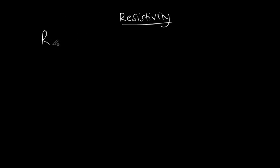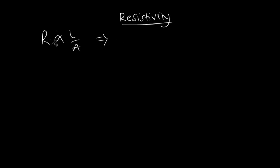The resistance offered by a metal wire is proportional to the length L, and inversely proportional to the cross-sectional area. Whenever we remove a proportionality sign we introduce a constant, and in this case that constant is what we call the resistivity, represented with the symbol rho. So we have: resistance is proportional to resistivity times length over cross-sectional area.